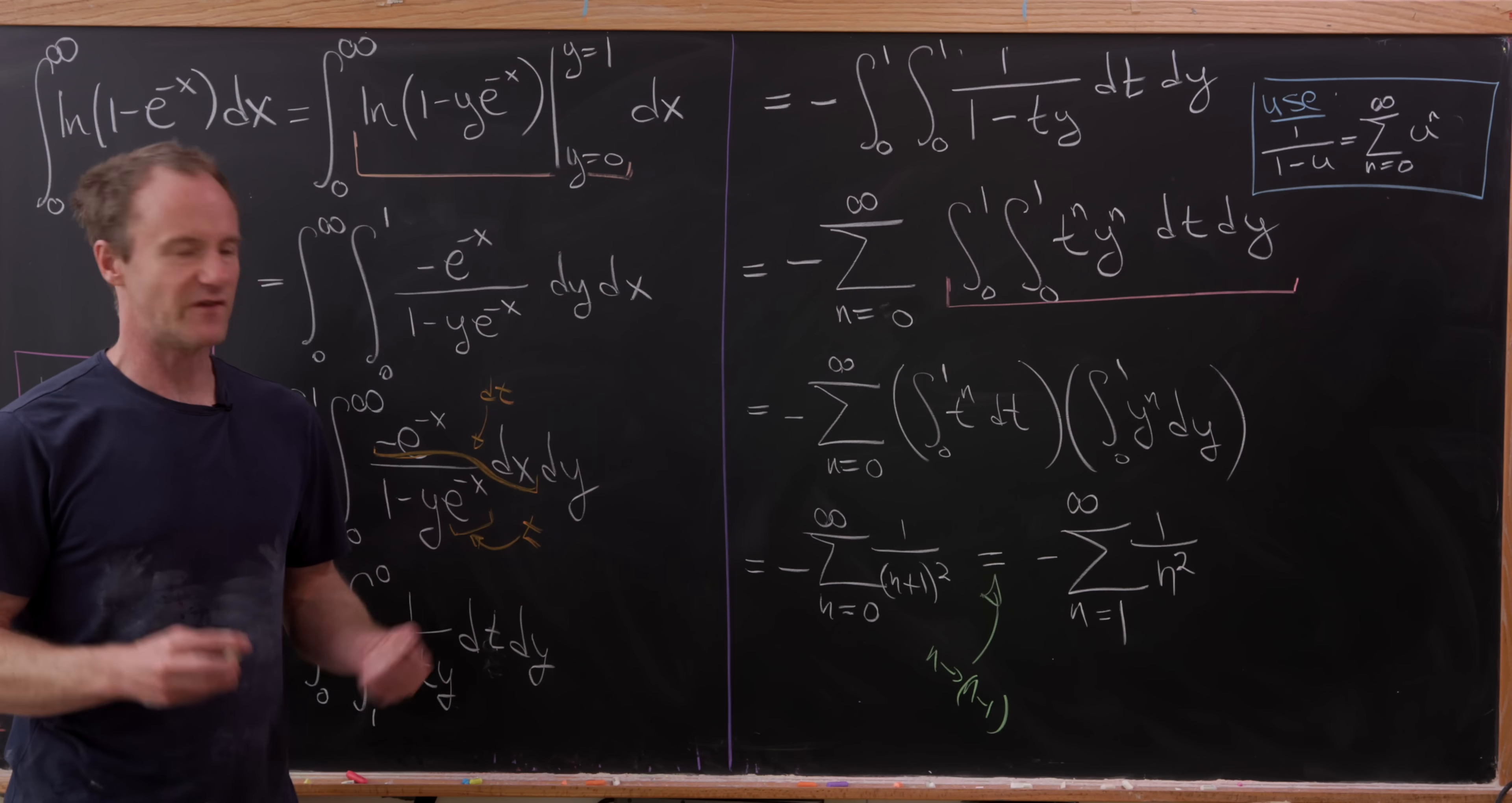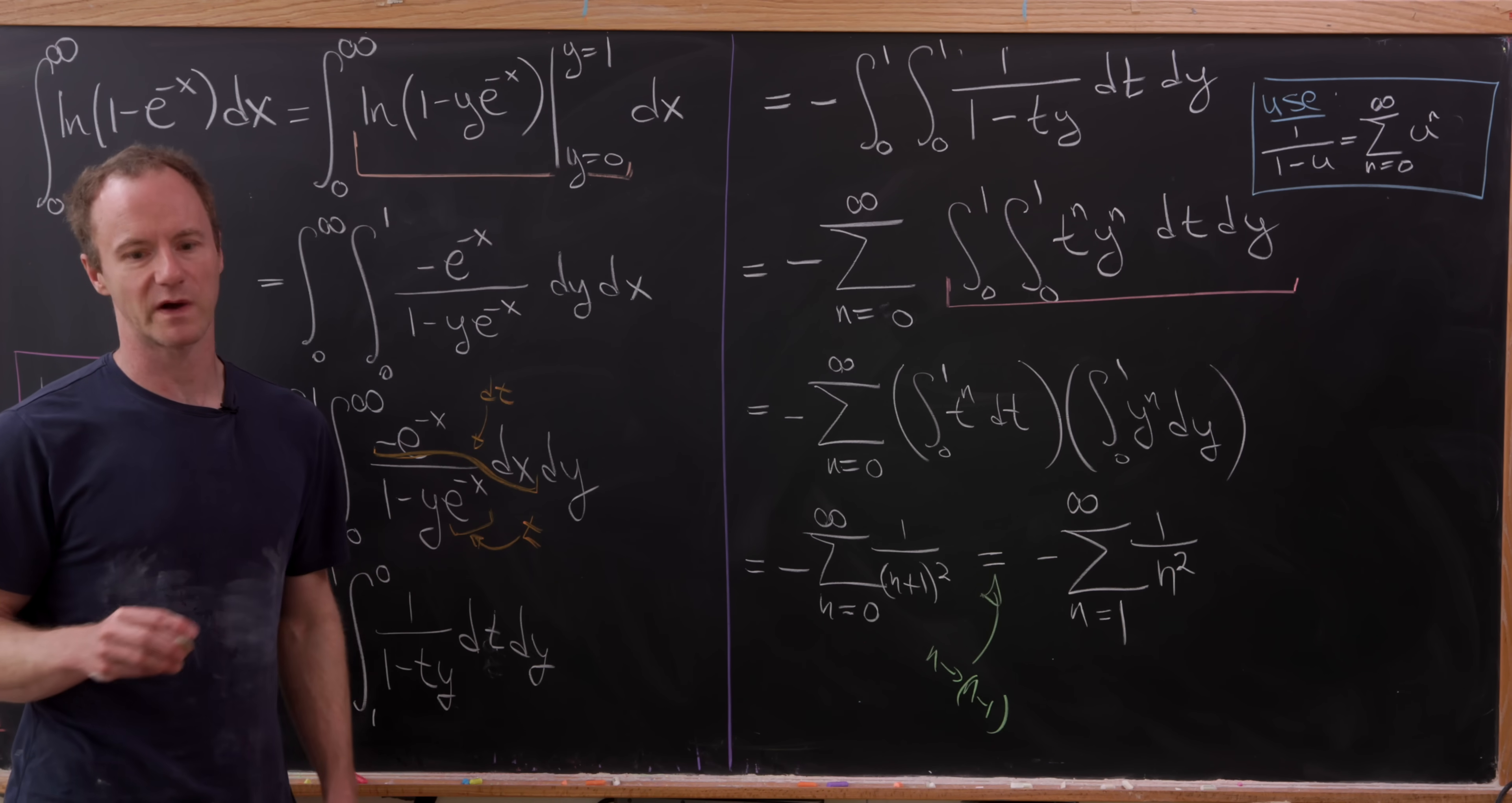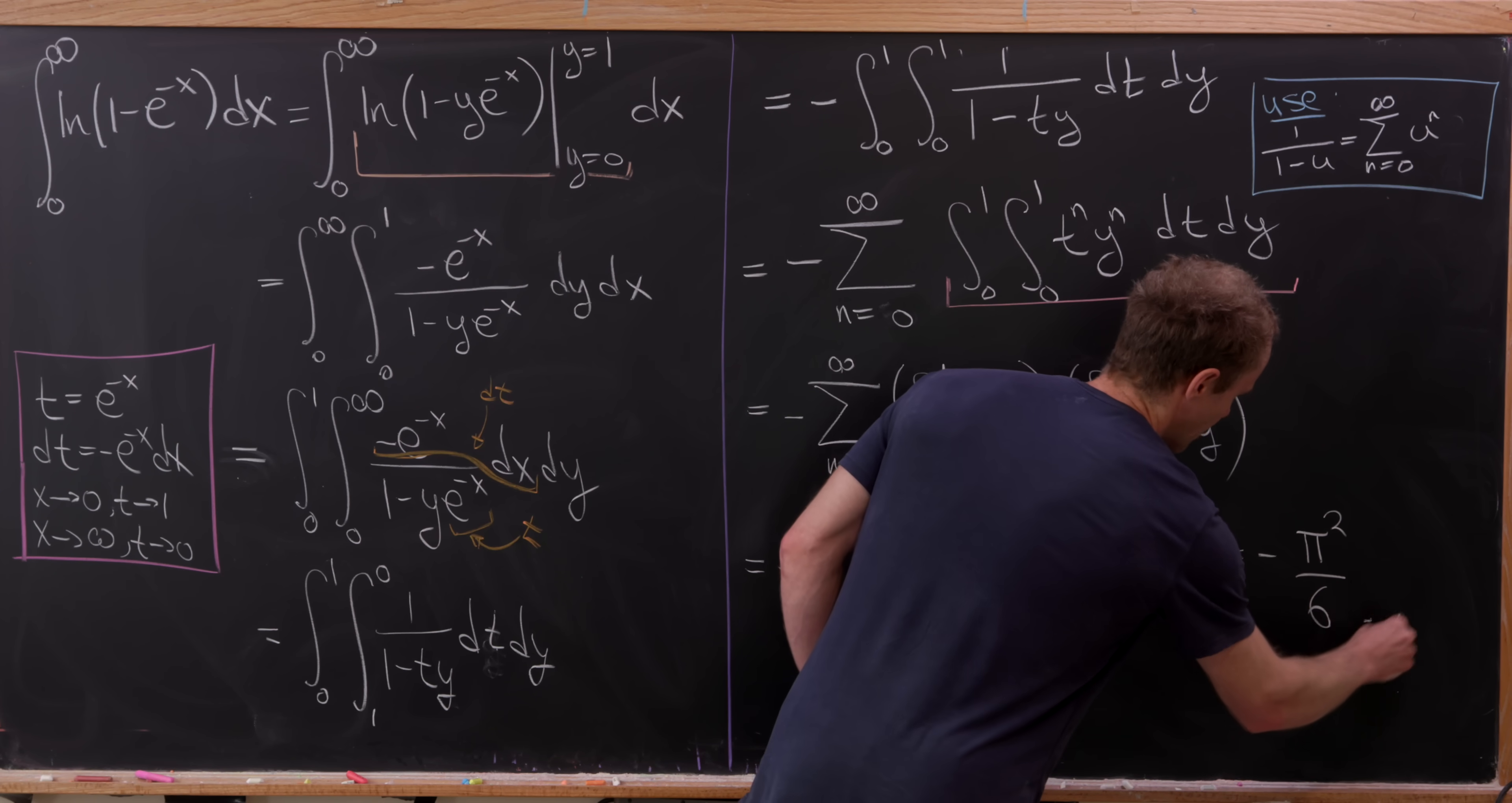But of course, that's a very famous sum related to something called the Basel problem. In fact, I've evaluated this sum a number of different ways on the channel already. You can check those out if you're psyched. What we end up with is the famous value of pi squared over six.